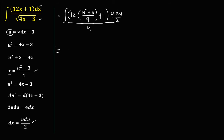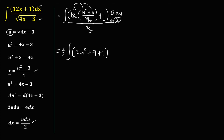Then simplify. The denominator u cancels with the u in the numerator. The constants 12 and 4 simplify to 3, giving us 1 half times the integral of 3u squared. Distributing gives 3u squared plus 9, and adding the plus 1 gives plus 10. The u du over u cancels to du. So we have 1 half times the integral of (3u squared plus 10) du.